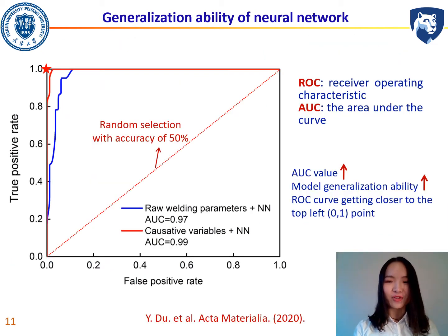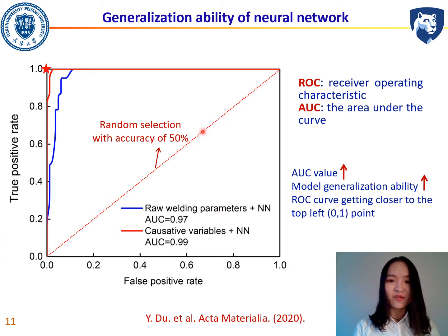The generalization ability of the neural network is represented by the ROC curve and AUC value. A higher AUC value means better model generalization, and the ROC curve will be closer to the top-left point. Random selection with 50% accuracy is marked by the red dashed line. When we fit the neural network with process parameters and material properties, the AUC value is 0.97. When we use the six computed variables, the AUC value improves to 0.99.